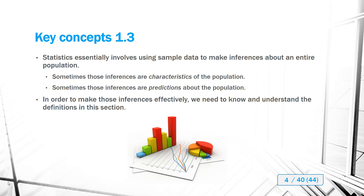For example, we can determine the percentage of men and women in a given town by taking a sample of that population and using it to make inferences about the population's characteristics. Sometimes we also want to make predictions — for example, predicting how a town is going to vote in the next election, which political party is going to carry the day. Statistics can serve either end: making inferences about characteristics or predictions.